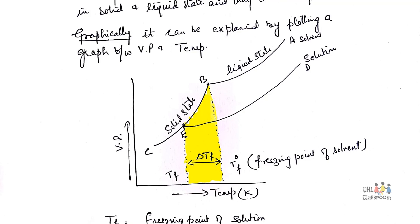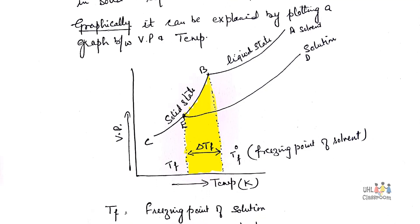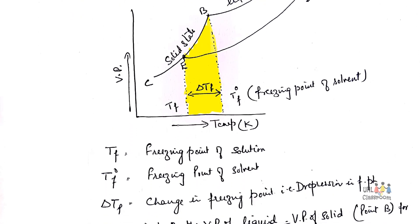Delta Tf is equal to T0F minus Tf and this delta Tf is called as depression in freezing point. It is clear that when a solution is formed, the freezing point of a solution becomes lower.